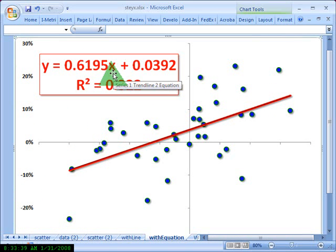Multiplied by X, which is the independent variable, plus the intercept, in this case 0.0392. That's where the linear regression intercepts the Y axis, right about here.